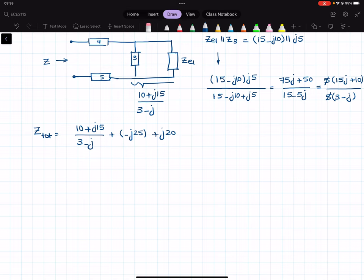So now what I'm going to get, I will have 10 plus J15 over 3 minus J minus 5J. Now I can take the common denominator over here in order to have 3 minus J. Now in the first one we have 10 plus J15, and the second one would be minus 5J multiplied by 3 minus J. So then my Z total would become, in the numerator, I have 10 plus J15 minus 15J.